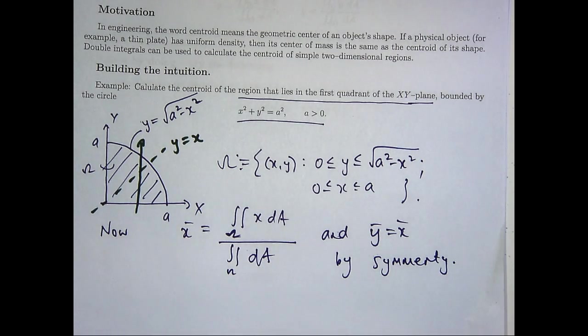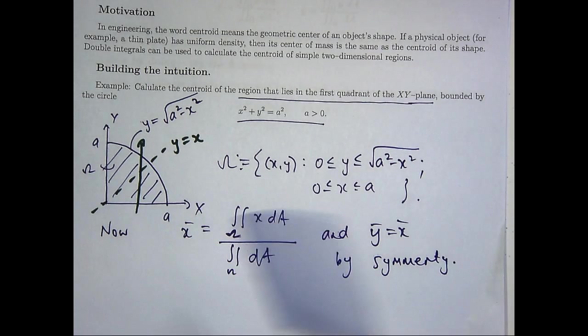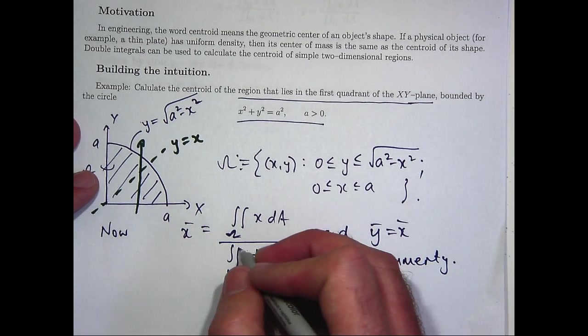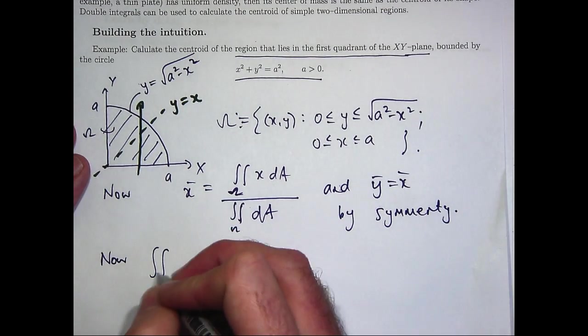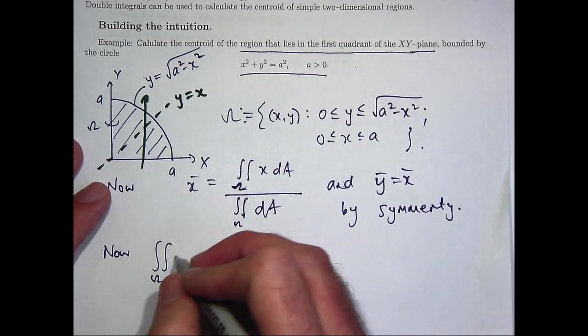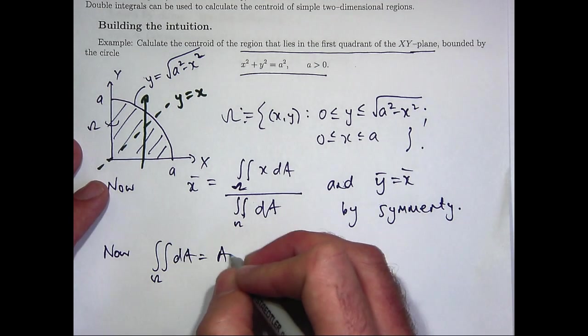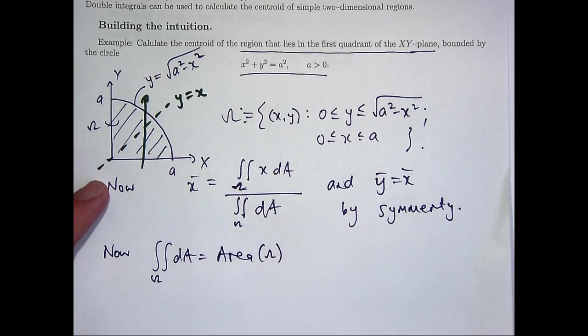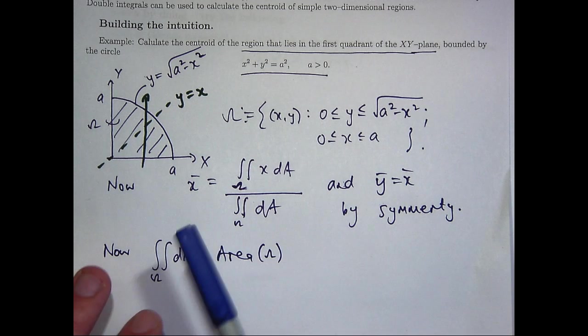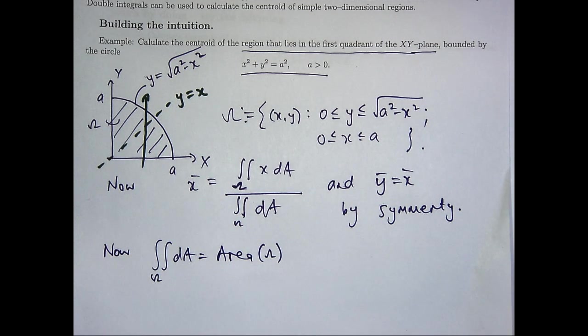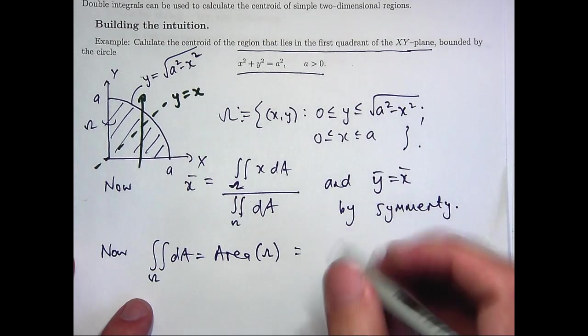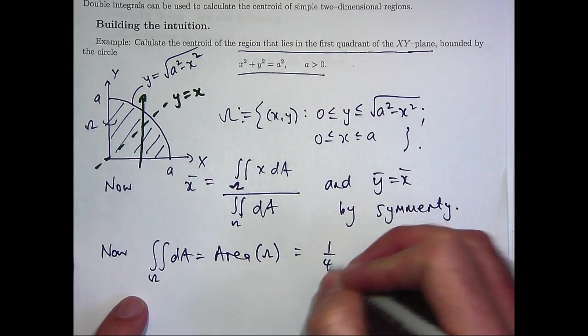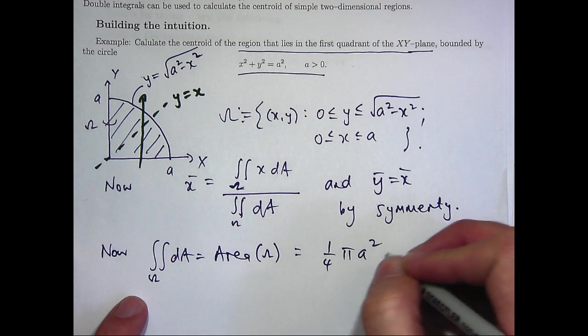So let's try to do these calculations. First of all, the denominator is just easy because this is just the area of omega. And we can easily calculate that area of omega. So, if this is essentially, it's got radius a, so it's just 1 quarter pi a squared.